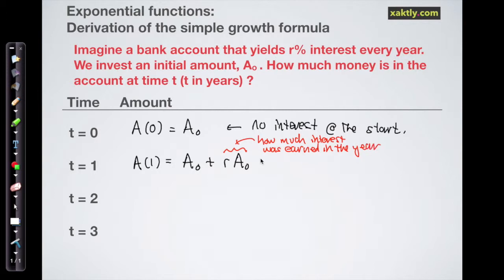And you can see that we can factor out the A naught, so we can just call that A naught times quantity one plus r. And what I'm going to do is put an exponent of one on there.